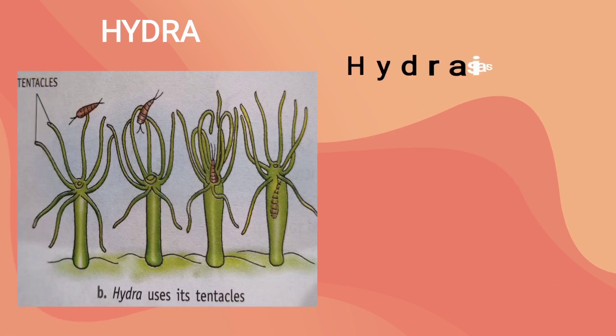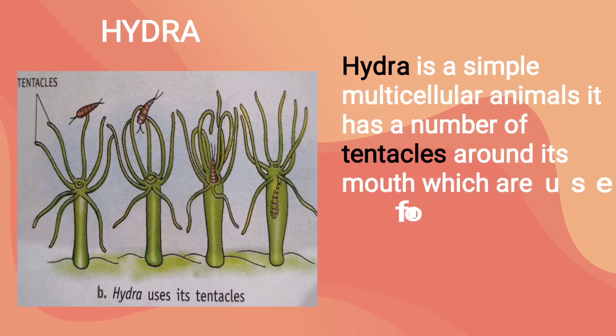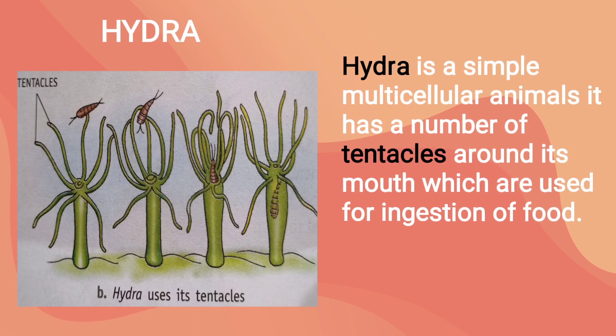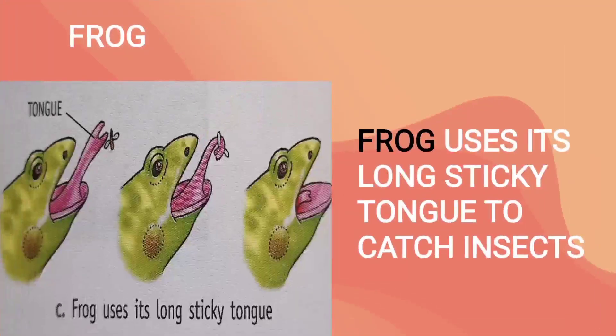Hydra is a simple multicellular animal. It has a number of tentacles around its mouth which are used for ingestion of food. You can see here in this picture. Frog uses its long sticky tongue to catch insects, as you can see in this picture.